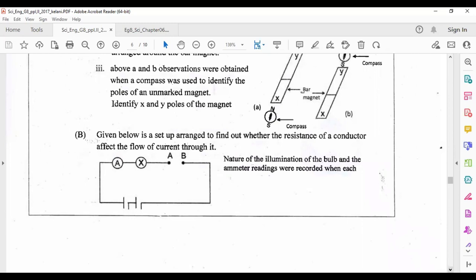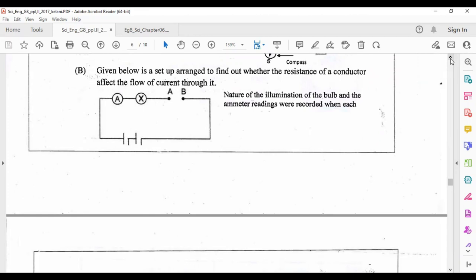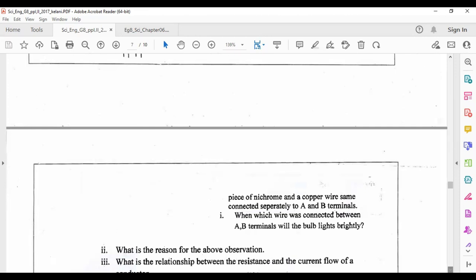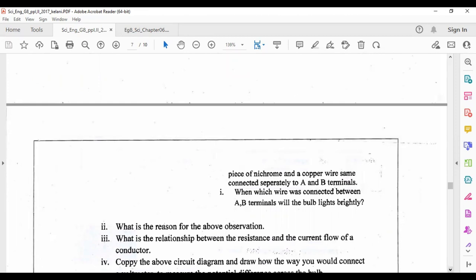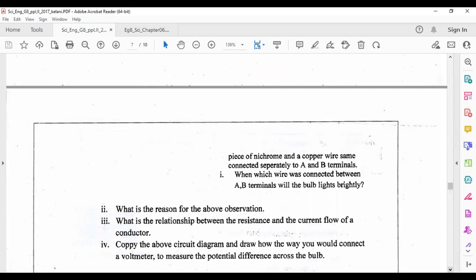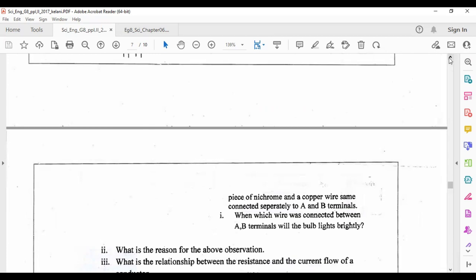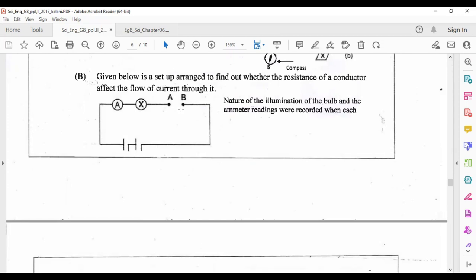B part: given below is a setup arranged to find out whether the resistance of a conductor affects the flow of current through it. The illumination of the bulb and the ammeter reading were recorded when each piece of nichrome and the copper wire were connected separately to A and B terminals. When which wire was connected between A and B terminals will the bulb light brightly? To light the bulb brightly, the resistance of the A and B part should be decreased. If the resistance is low, the current flowing through the bulb is high, so it is lighting brightly. From copper and nichrome, the copper wire has the lowest resistance value, so we have to write the answer as copper wire.